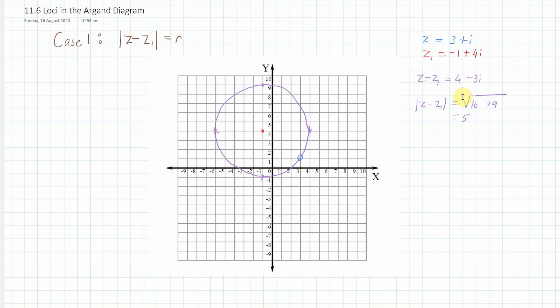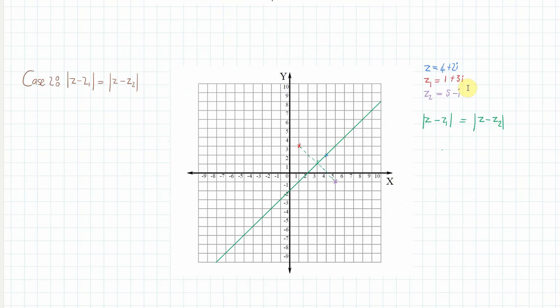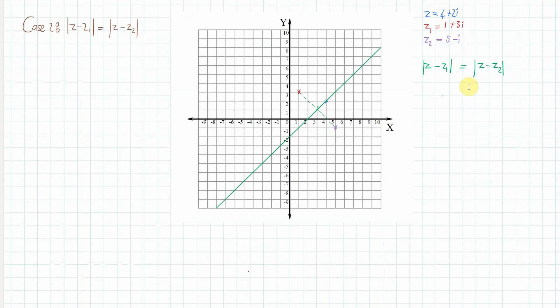Let's move on to the second case. If we have |z − z₁| = |z − z₂|, meaning the modulus of z minus one complex number equals the modulus of z minus another complex number, then z must lie on the perpendicular bisector of those two complex numbers.